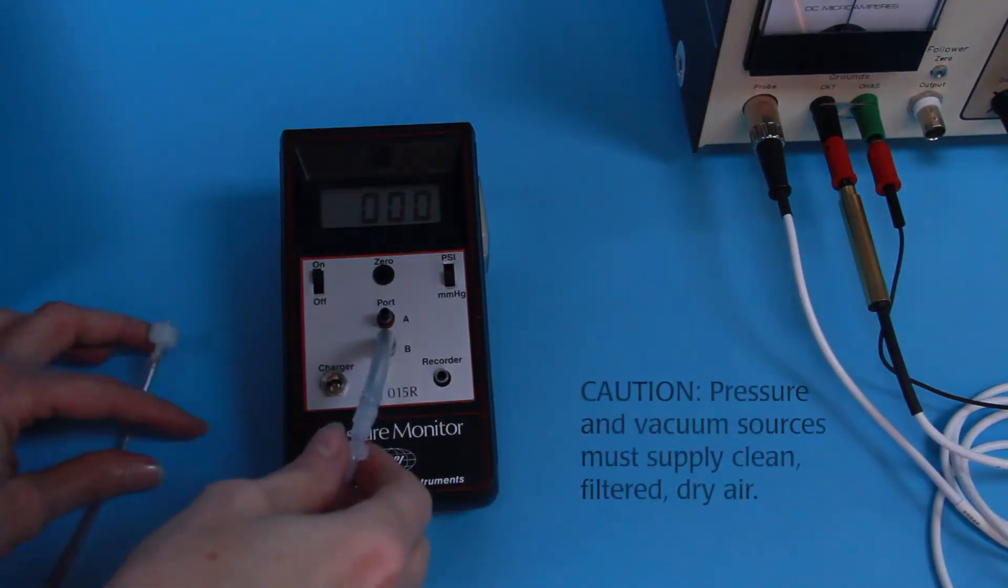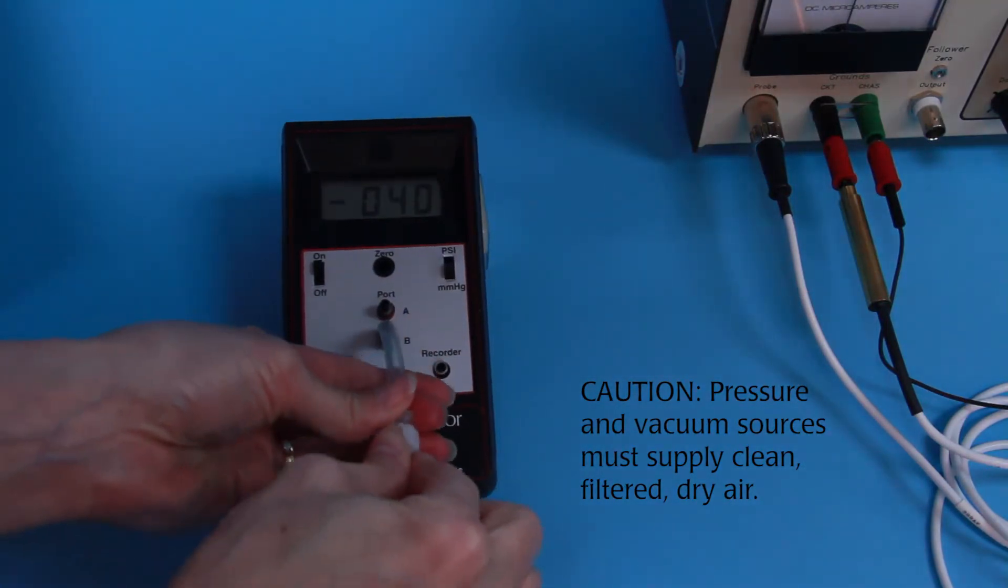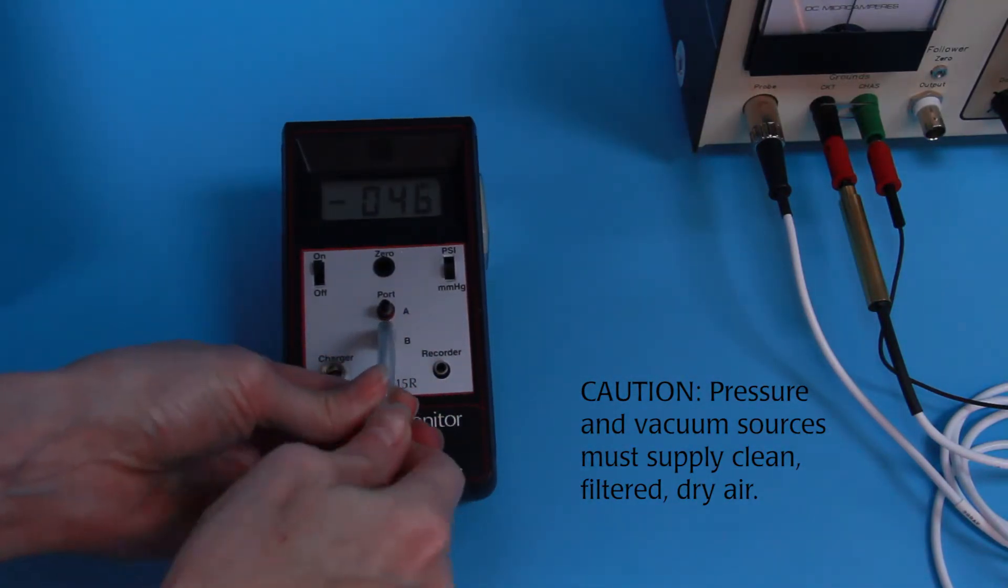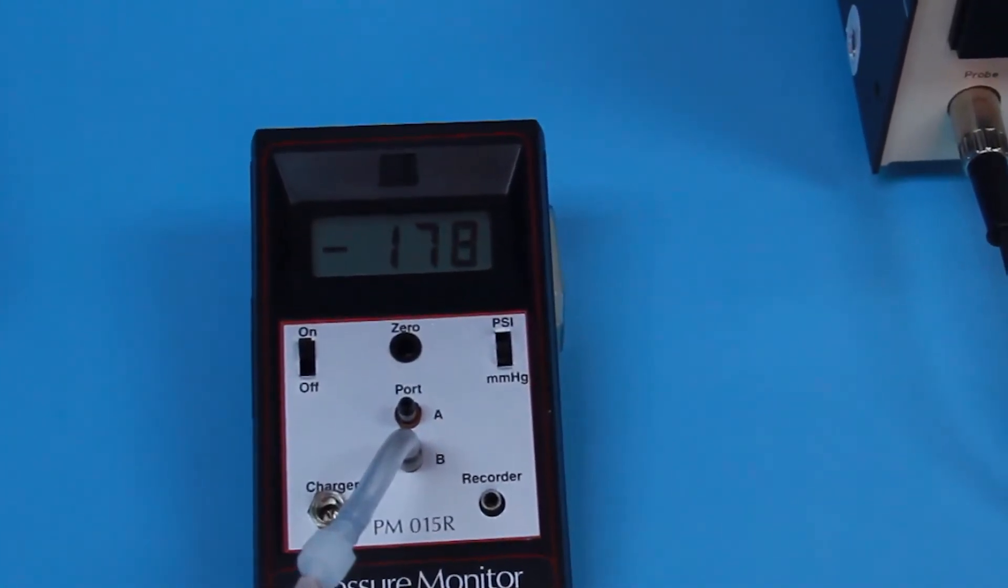It's important that the pressure and vacuum sources supply clean, filtered, dry air. Air that is not clean and dry damages the piezo valve, which is costly to replace. The pressure and vacuum may be regulated to pressures other than our suggestion.